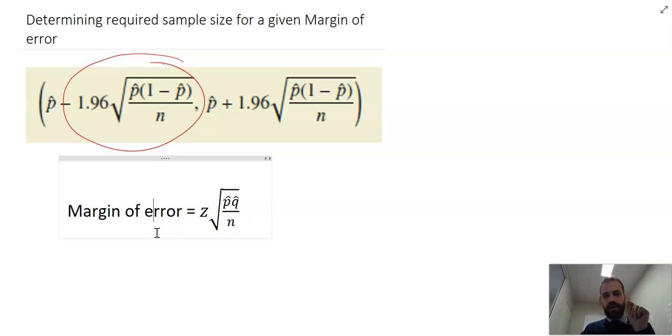So what our margin of error does is say we are going to be this amount from the actual proportion. So if our sample proportion was 52% and our margin of error is 3%, then we're going to be between 52 minus 3%, which is 49%, and 52 plus 3%, which is 55%.